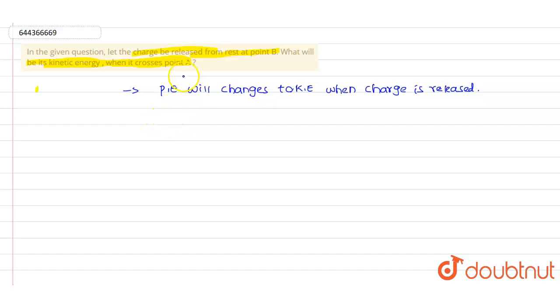So as in the question it is said that the charge will be released from rest at point B, at that time potential energy changes to kinetic energy. When it crosses point A, it possesses kinetic energy. The kinetic energy will be equal to 100 joules.